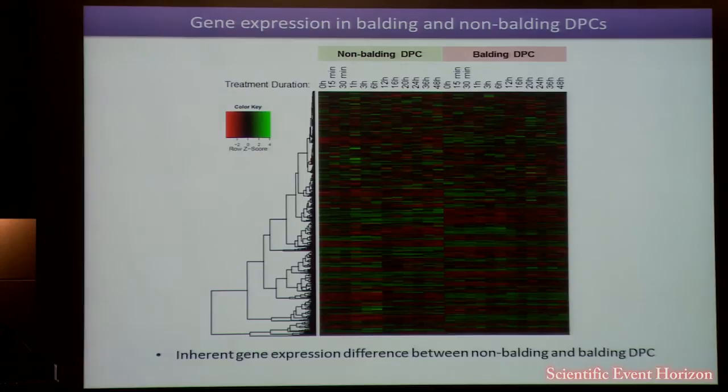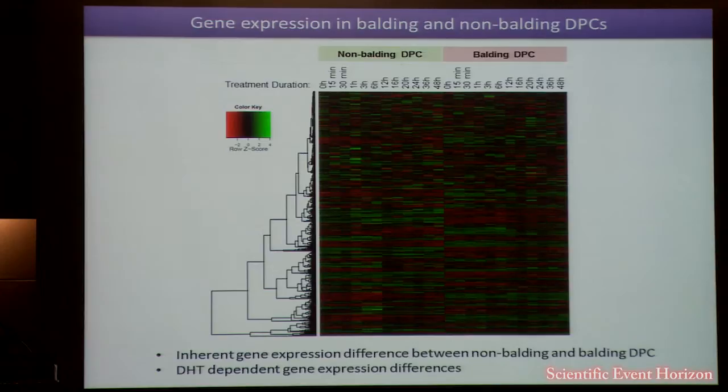When we first received expression data, we realised there was an inherent gene expression difference between non-balding and balding DPCs. From the zero-hour treatment — meaning no DHT at all — genes up-regulated in the non-balding are entirely down-regulated in the balding. Apart from that, we also observed DHT-dependent gene expression differences: with increased duration of DHT treatment, genes show slightly elevated or decreased expression.